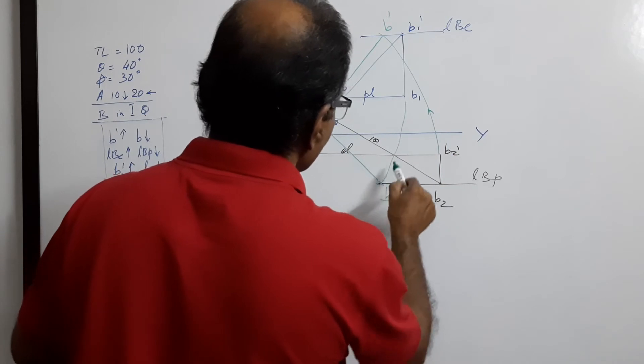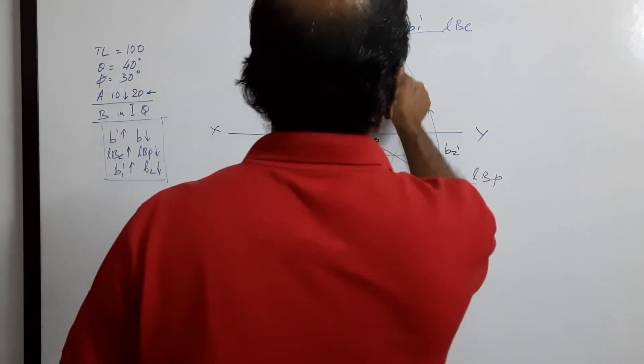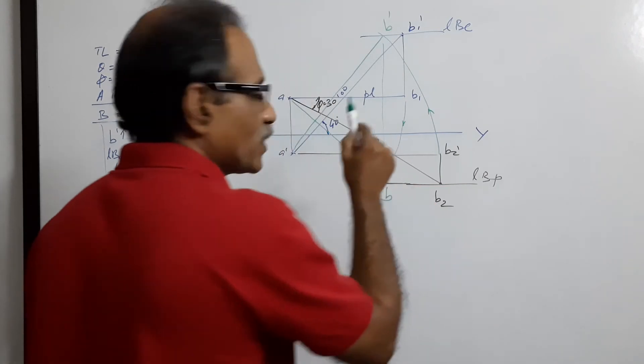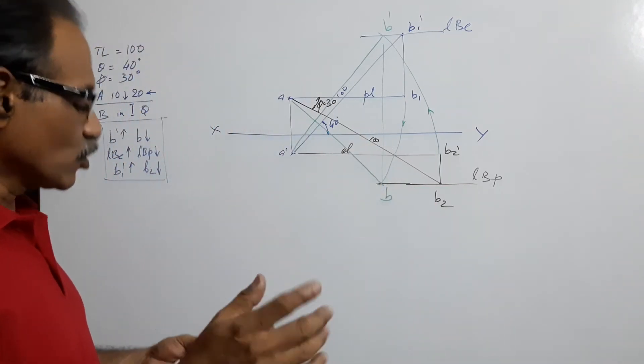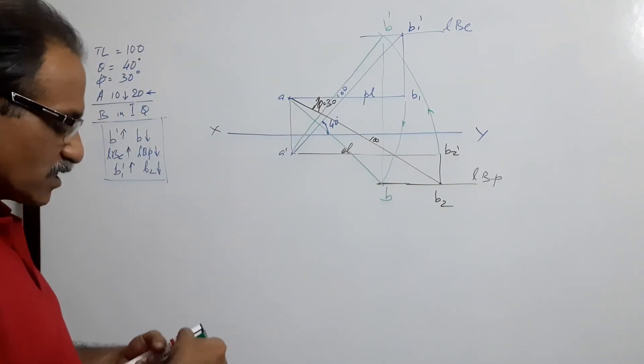AB is the final plan. After drawing the plan and elevation, draw a projector through B dash which will pass through B. You have now drawn the plan and elevation.